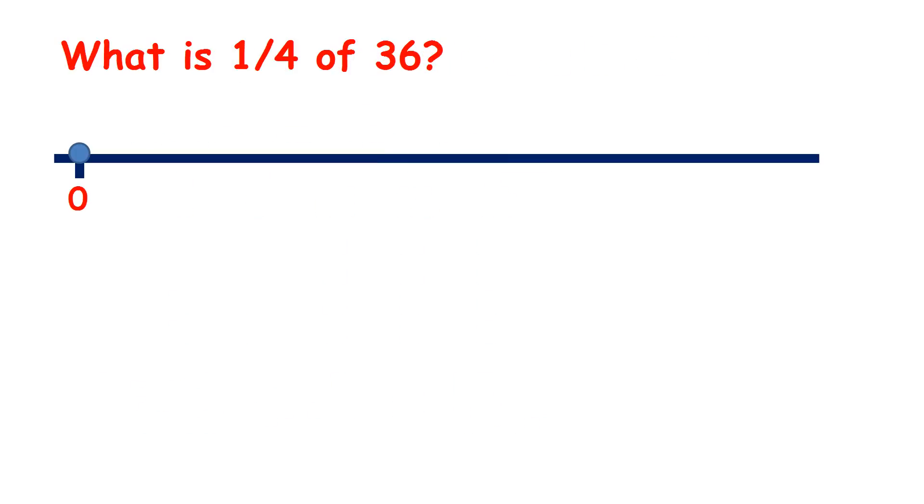Now we have what is a quarter of 36? So when you have a 1, and then a line, and then a 4, you have a quarter, or in America they call it a fourth, which makes sense. But in the UK we call it a quarter.